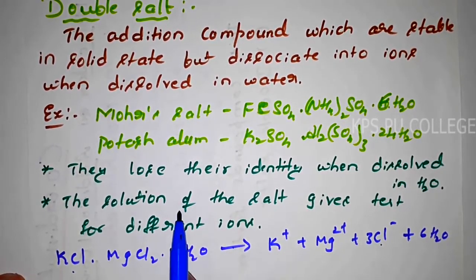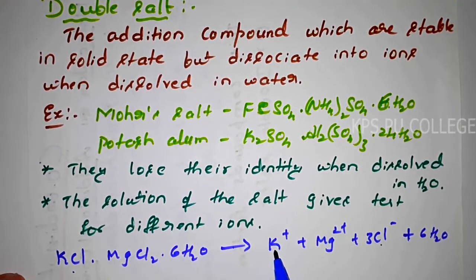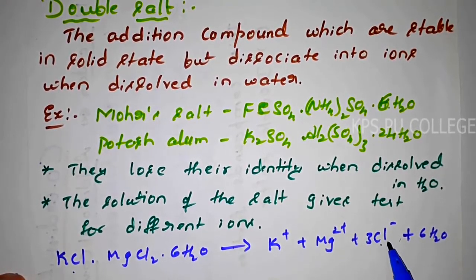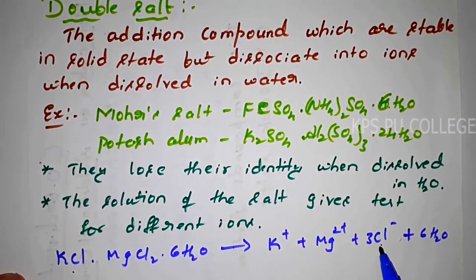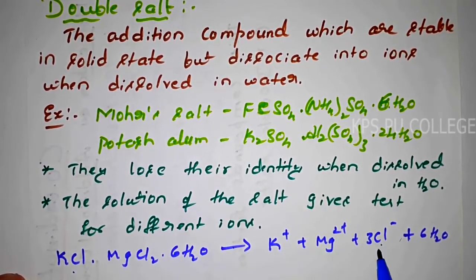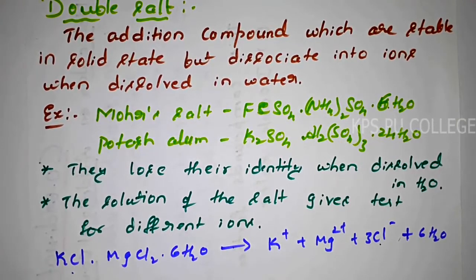Another important property: the solution of the double salt gives tests for different individual ions. Because these are freely available free ions, we can test for potassium, magnesium 2+, and chloride ions separately. This is because the free ions are available in solution. Double salts are stable in solid state but dissociate into free ions when dissolved in water — that is the key property.